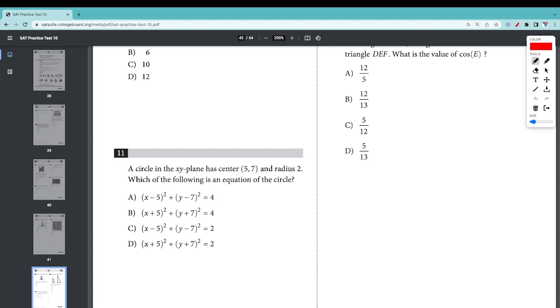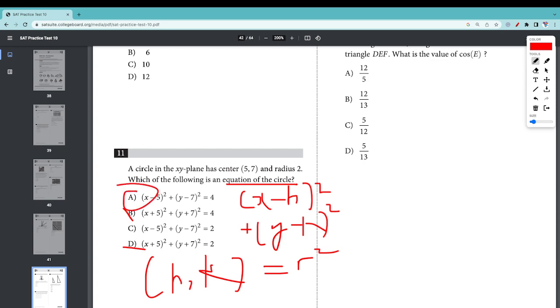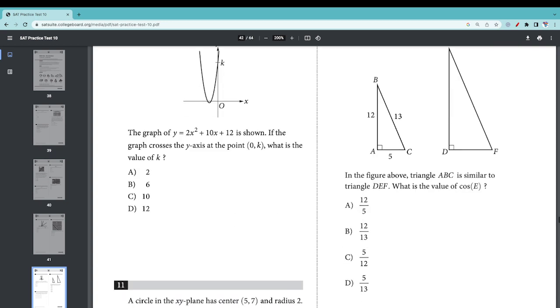Number 11: What is the equation of a circle in the xy plane with center (5, 7) and radius 2? The equation of a circle is x minus h squared plus y minus k squared equals r squared, where h, k are the coordinates of the center. We're looking for x minus 5 squared, so r squared is 2 squared which is 4. 11 has to be A.